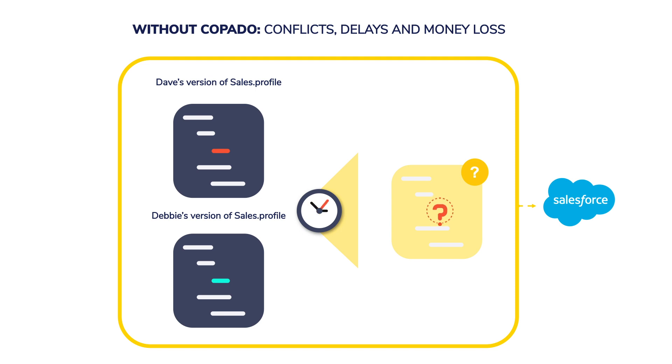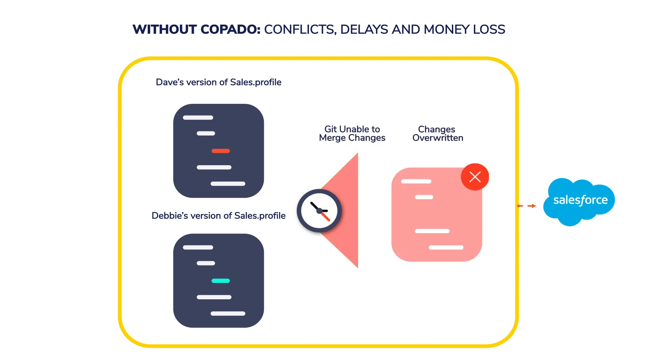There are multiple scenarios where Git is not able to merge changes, and as the team grows, handling conflicts becomes even more chaotic.